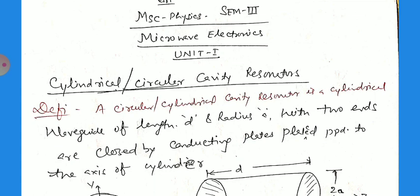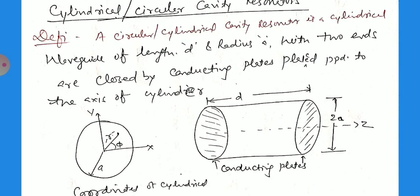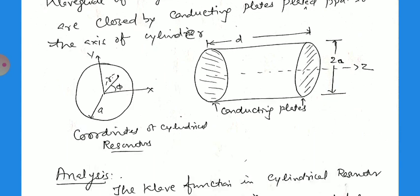Placed perpendicular to the axis of the cylinder. In the figures we show it is a cylindrical waveguide. The two ends are closed by conducting plates. This is a circular or cylindrical cavity resonator with radius A and length D. Now we can write the coordinates of it: a particular point, the arc distance from the center, angle phi, and radius A.